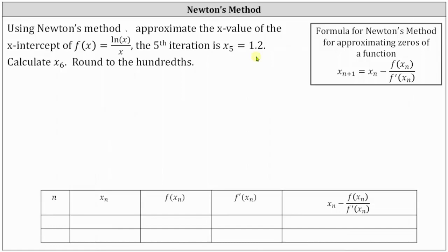Newton's method uses tangent lines to approximate zeros of a function. We use the equation of a tangent line to derive the formula for Newton's method, where x sub n+1 is equal to x sub n minus f(xₙ) divided by f′(xₙ).